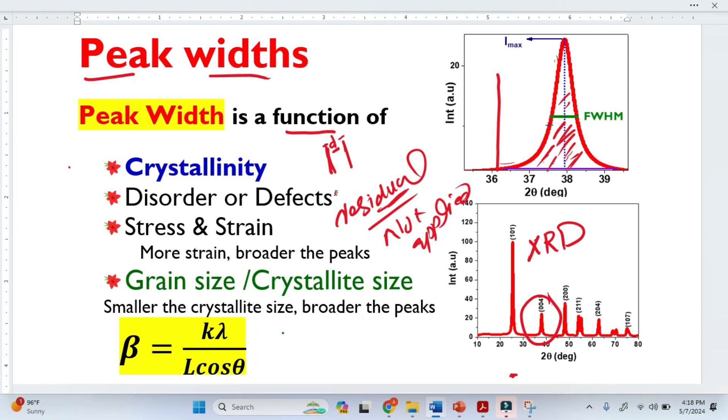And because of that stress, because of that change in d-spacing, we have changes in this peak width. We can see here that more strain, broader the peaks. If we have more strain or stresses in a material, we will have broader peaks and vice versa.